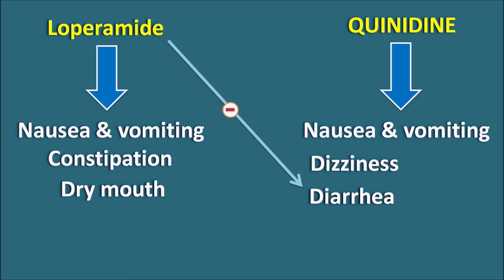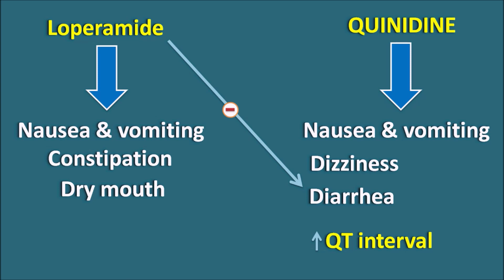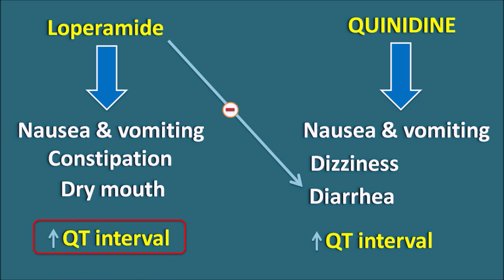At high doses quinidine produces side effects as a pro-arrhythmic agent, increasing the QT interval and precipitating torsades de pointes. Loperamide at therapeutic doses does not produce QT interval prolongation, but at very high doses it can increase the QT interval. So both drugs can increase QT interval at high levels, suggesting a potential pharmacodynamic interaction — however, since loperamide has poor absorption and does not increase QT at therapeutic doses, it cannot interact with quinidine by a pharmacodynamic mechanism at standard doses.